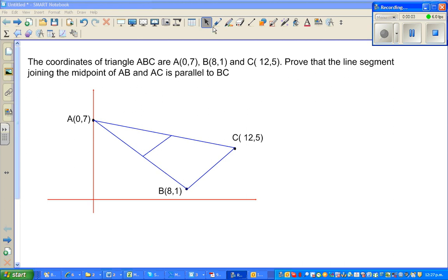Continuing with coordinate geometry. This is an example where you have to prove something. The coordinates of triangle ABC, this is triangle ABC, this is not drawn to scale, are A(0,7), so this is point A(0,7), B is (8,1) and C is (12,5). Prove that the line segment joining the midpoints of AB and AC is parallel to BC.